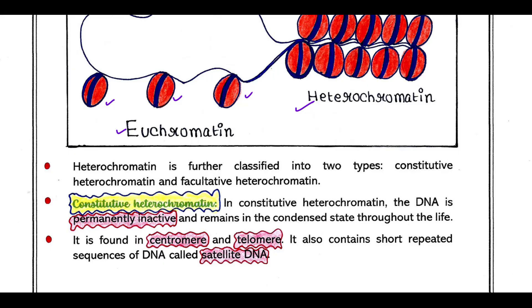So what is constitutive heterochromatin? In constitutive heterochromatin, the DNA is permanently inactive and remains in the condensed state throughout the life. The DNA is very much tightly packed and it is found mainly in the centromere region and telomere region of the chromosome.